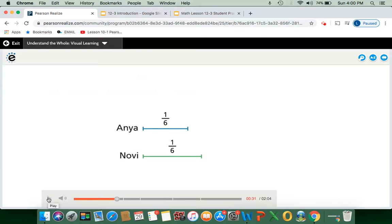Okay, so you can see here that they're both at the same length. So let's see what the whole is. What do you notice about the distances Anya and Novi have completed? So what do you notice? Like we just said, they should be the same, right? Even though the lengths of the lines are longer for Novi and a little bit shorter for Anya, it's still one-sixth. So we're considering it the same thing.